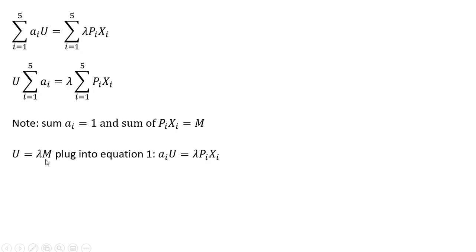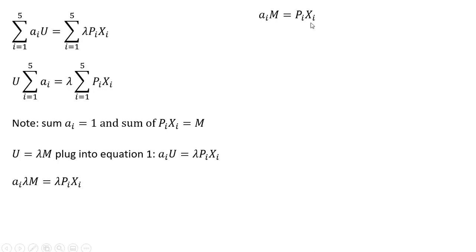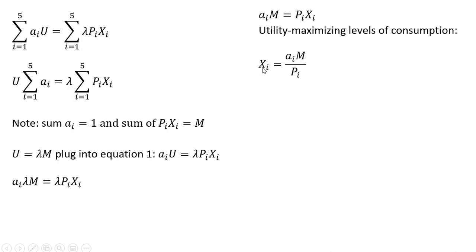Making those substitutions, the expression becomes U equals lambda times m. Now plugging this into equation one — wherever we have U we substitute lambda times m — the lambdas cancel, and solving for x subscript i gives us the utility-maximizing levels of consumption, which is the demand for each of the five goods.